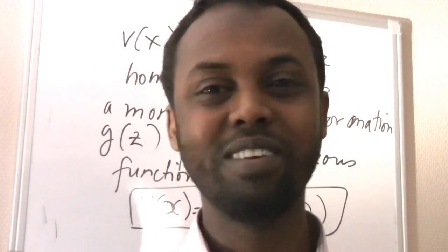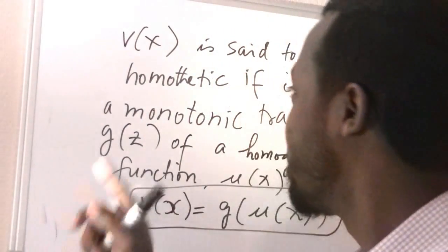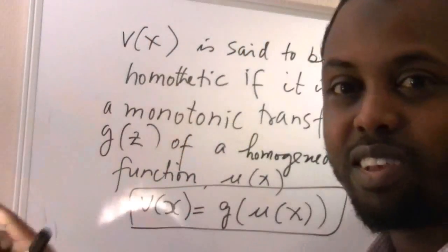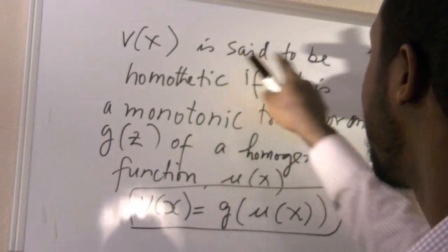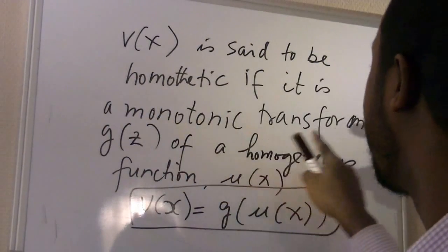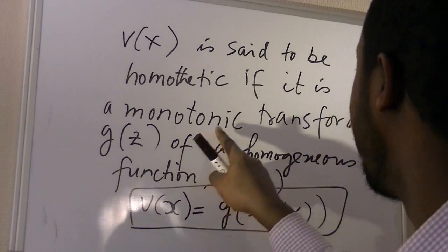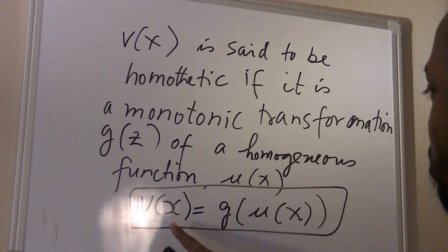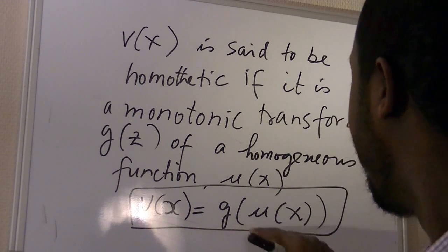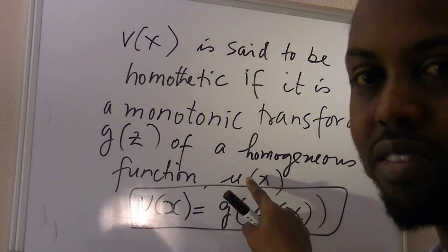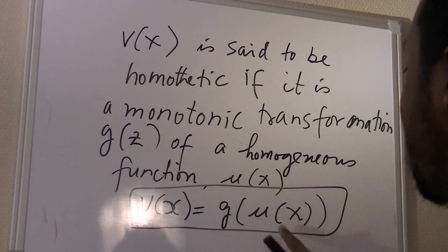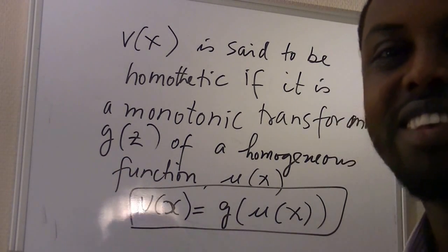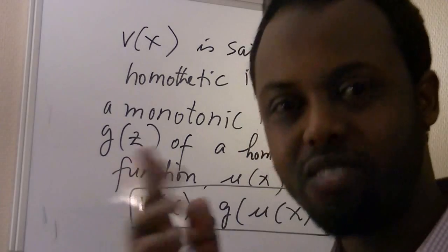Now a formal definition of a homothetic function. Let's say we have v of x — it is said to be homothetic if it is a monotonic transformation g(z) of a homogeneous function u of x. So if we have a homogeneous function u(x) that is monotonically transformed by another function, then the function we get is known as a homothetic function. Let's take an example.